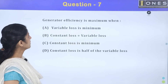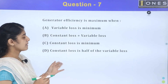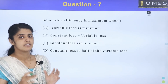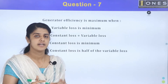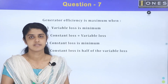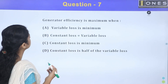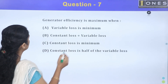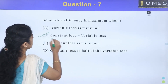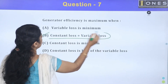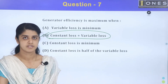Next question: general efficiency is maximum when? For all electrical machines, the maximum efficiency condition is: constant loss is equal to variable loss.